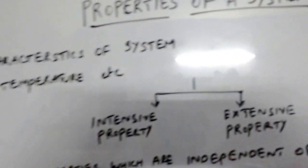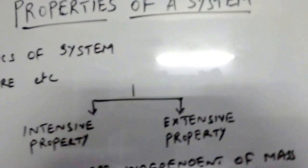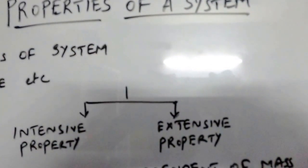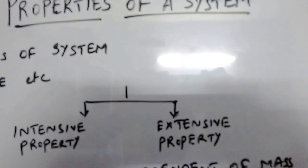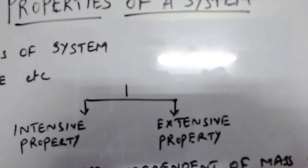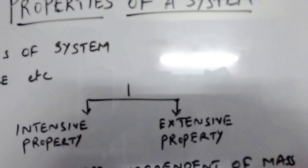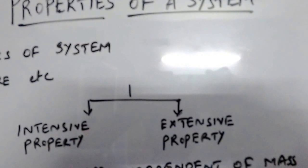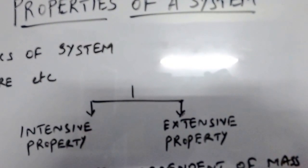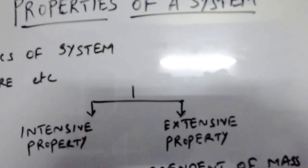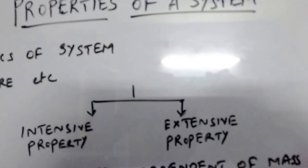Finally, a property is a point function. Pressure is a point function and temperature is a point function. Properties are not path functions — they depend only on end states.